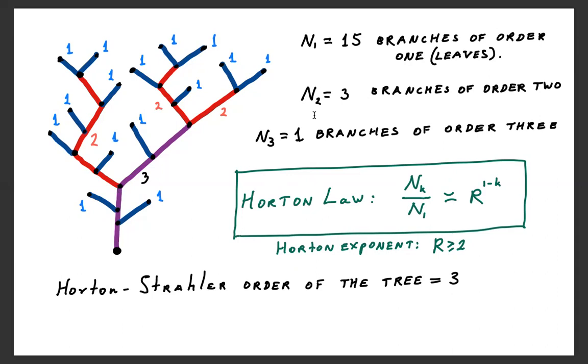That was eliminated after the third pruning, it's color-coded purple here. So the whole tree was eliminated after three prunings, so the Horton-Strahler order of the tree is three.